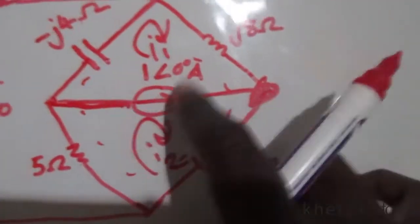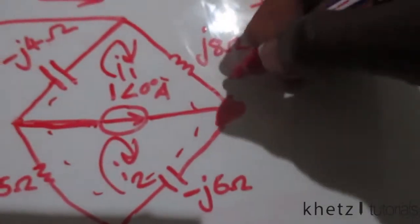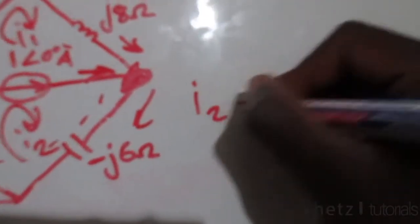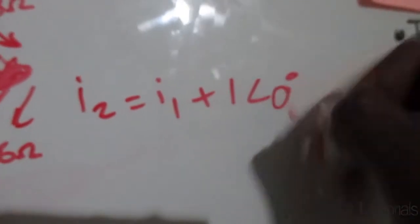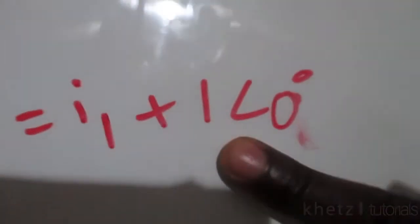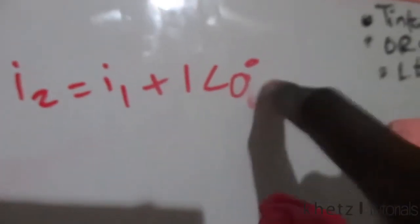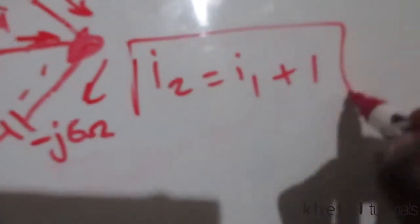Now we use the node here to form a relationship between I1, I2, and our current source. I1 and the current source both enter that node and split to form I2, which gives us I2 = I1 + 1, since the current source has a value of 1 at an angle of zero — which is just a constant. This is our first equation.